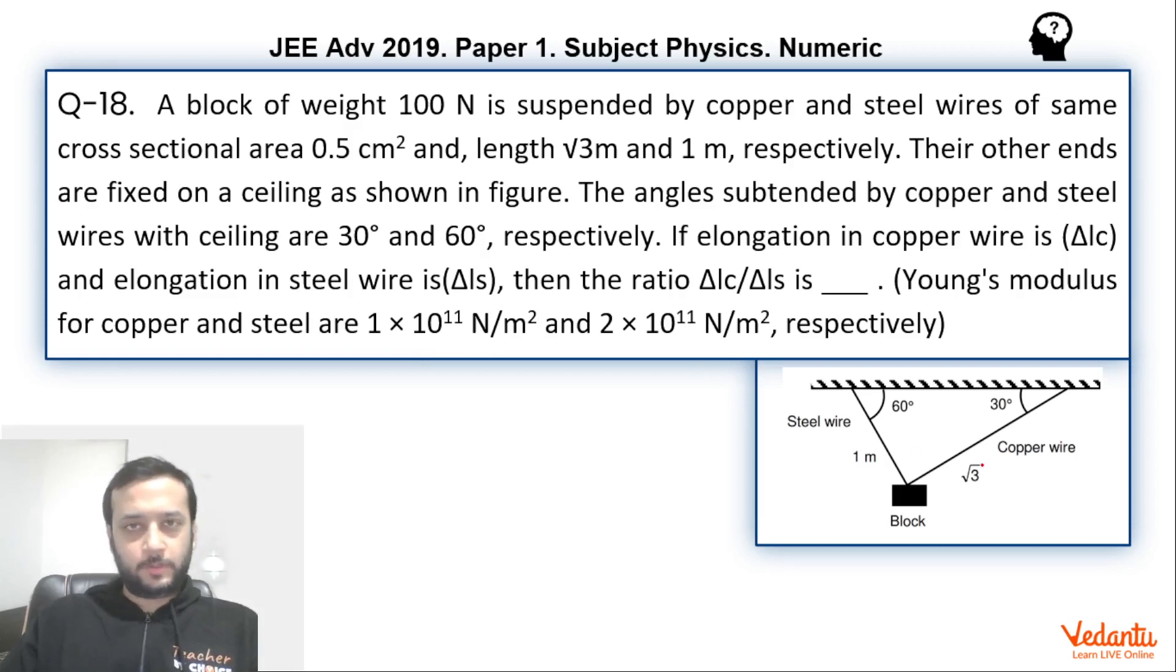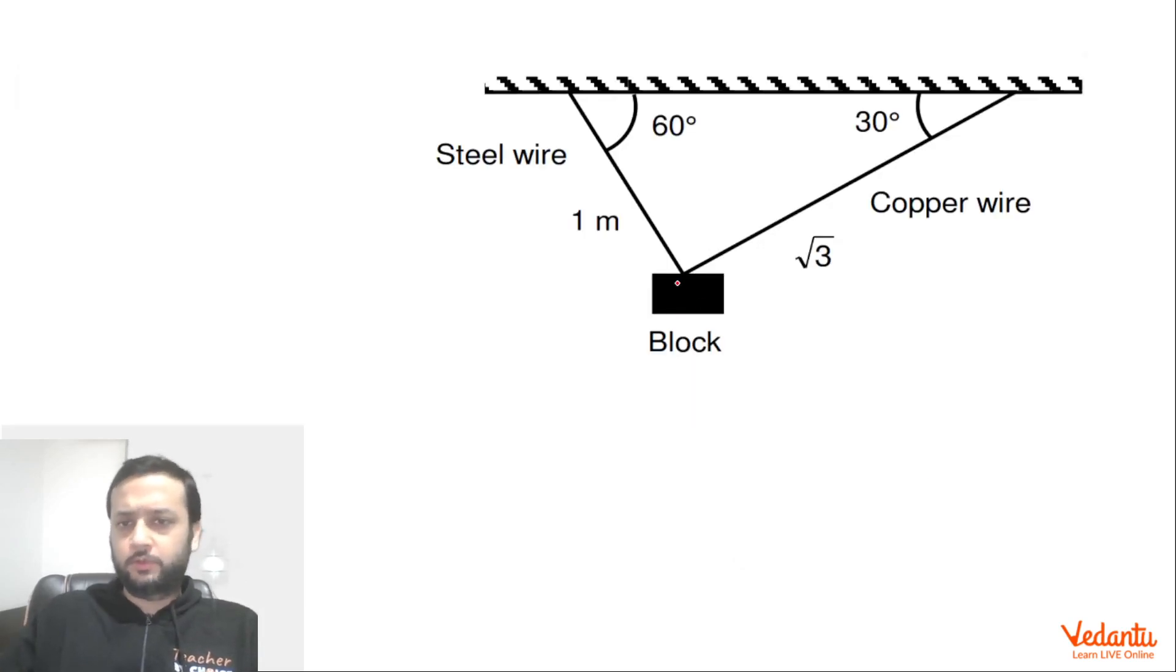So here we have a steel wire and a copper wire, the lengths have been given, cross sectional area have been assumed to be same. So we hung a block whose mass or weight 100 Newton has been given and we have to find the ratio of the elongation in the copper wire to the steel wire. This is what we have to find. So let's see how do we do this question.